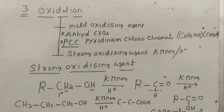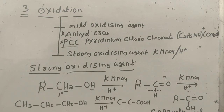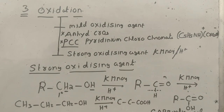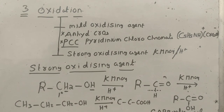In today's class we discussed Type 3 property of alcohol — the last chemical properties of alcohol. We discussed three reactions: Number 1 was dehydration with concentrated sulfuric acid, including the carbocation mechanism. Number 2 was dehydrogenation — loss of two hydrogens. Number 3 was oxidation. Tomorrow we will wind up alcohols and do the chemical tests of alcohol. Thank you, that's all for today's class. See you tomorrow, take care, bye.